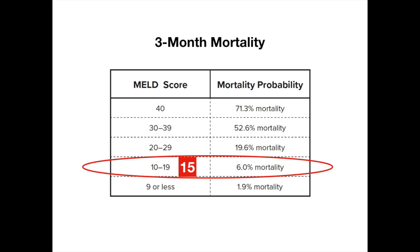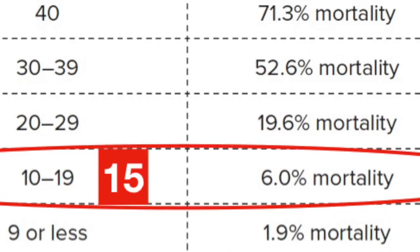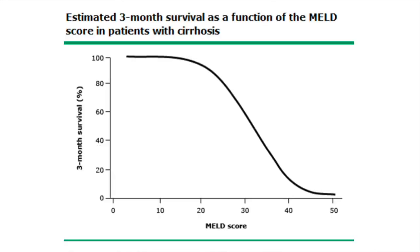The MELD score gives you an approximation of three-month mortality. A MELD score of 40 is associated with a very high, unacceptable mortality of about 71%, while a MELD score in the 10 range has only a 6% mortality rate. I highlight the number 15 because it seems to be the cutoff with regard to transplant. A MELD score of 15 or less means we are generally less worried about urgent transplant; 15 or greater is when mortality increases and we want to seriously consider liver transplant.